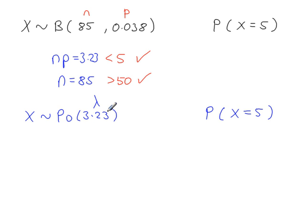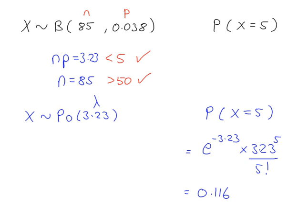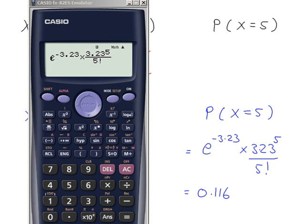The mean of the binomial distribution is 3.23, which becomes the mean of the Poisson distribution, so lambda equals 3.23. We're working out P(x=5). This value of lambda is not in the Poisson tables, so we have to use the Poisson formula: e to the power of minus lambda — make sure you put the minus into your calculator — times lambda to the power of x, divided by x factorial. So e^(−3.23) × 3.23^5 ÷ 5!, which to 3 significant figures is 0.116.